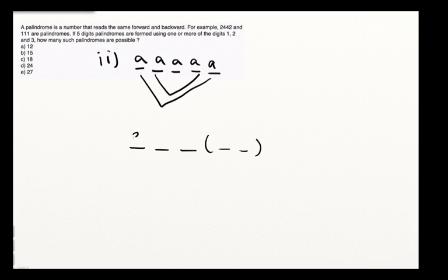For the first slot, we've got obviously three choices. For the second slot — we could have A, A, A; we could have A, B, A; we could have A, B, C — that means we've got three possibilities for the second slot. For the third slot, again we've got three possibilities, because we could have A, A, A or A, A, B or A, A, C or A, B, C or B, A, C, or any of these possibilities. So again, that's three.